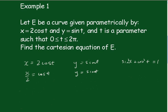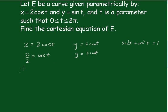Now we'll square both sides. So I'll have here x squared on 4 equals cos squared t, and y squared equals sin squared t.